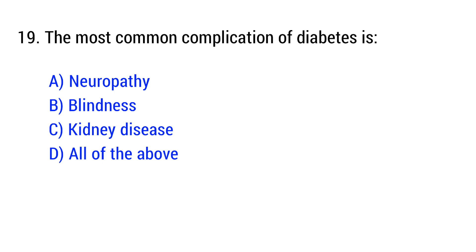Question number 19. The most common complication of diabetes is? The right answer is option D: All of the above.